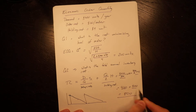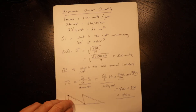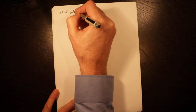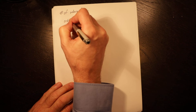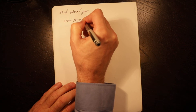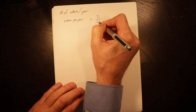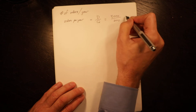By definition with the economic order quantity, setup costs and holding costs are going to be equal. If you calculate them and they are not the same, you have calculated your EOQ incorrectly. Number of orders per year equals D over Q — total demand divided by quantity ordered per order — which is 4,000 divided by 200, equals 20 orders per year.